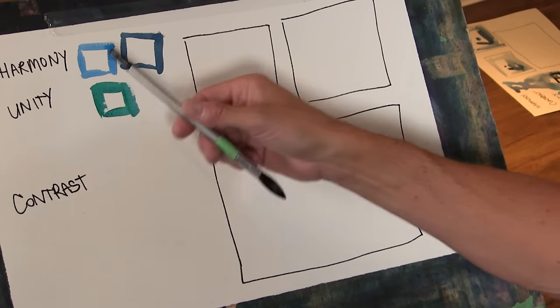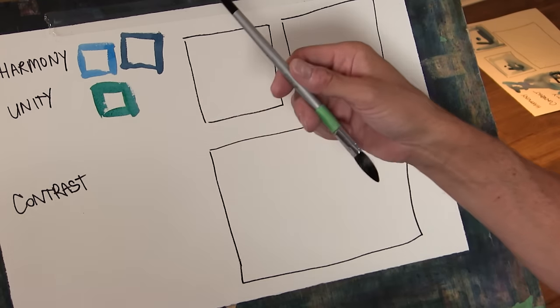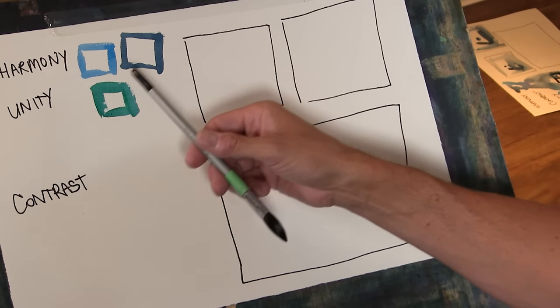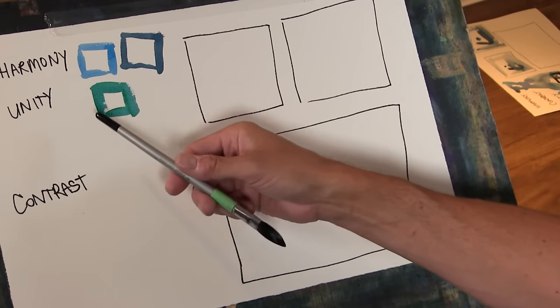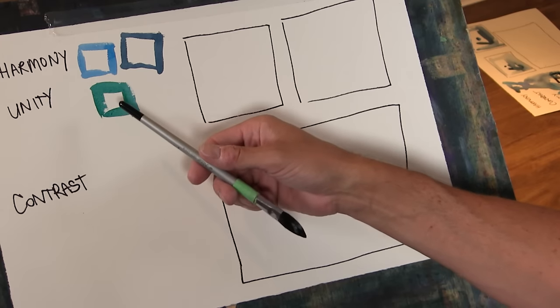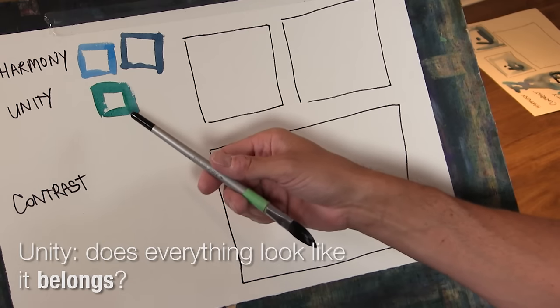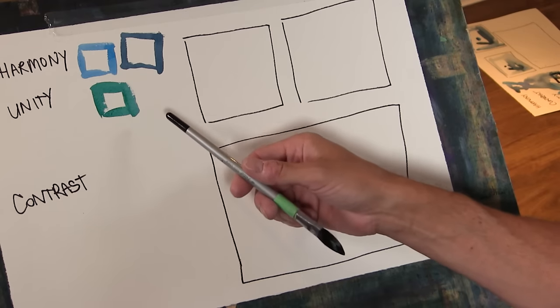So these shapes are very harmonious, and when we have things in our painting that are all similar then we get unity. Unity is the idea that everything that appears on our page looks like it belongs with the other things that are on the page.